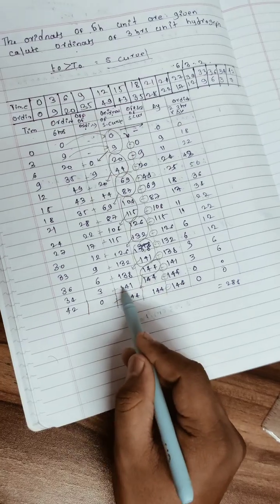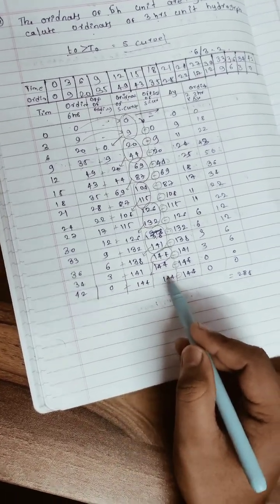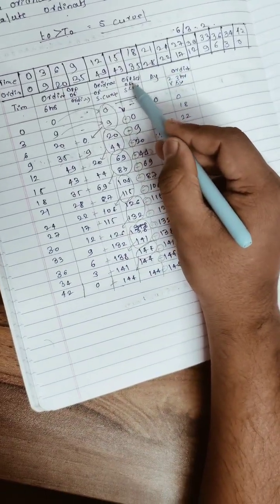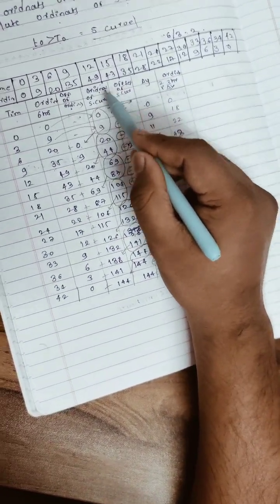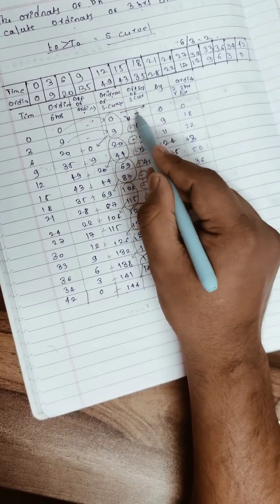Now for offset of S-curve, we put the S-curve ordinate values offset by one row, leaving the first row blank and shifting all values down.